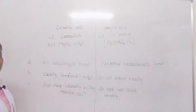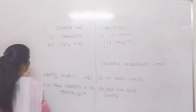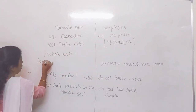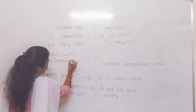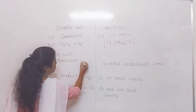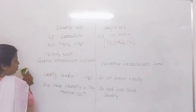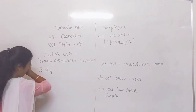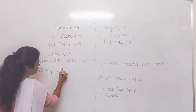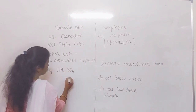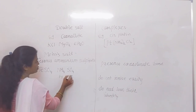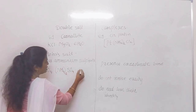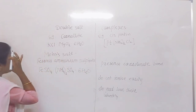The second example of a double salt is Mohr's salt, also called ferrous ammonium sulfate. Its formula is FeSO₄·(NH₄)₂SO₄·6H₂O. Ammonium means NH₄, sulfate means SO₄ with oxidation number minus 2 and ammonium plus 1, so we cross-multiply to get the formula of ammonium sulfate. These are the examples of double salts.